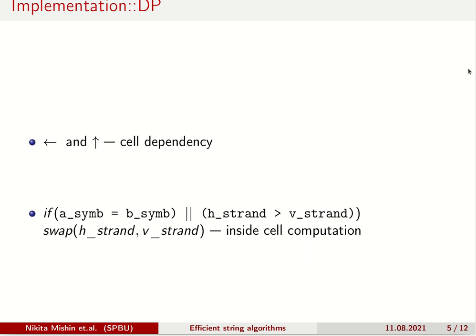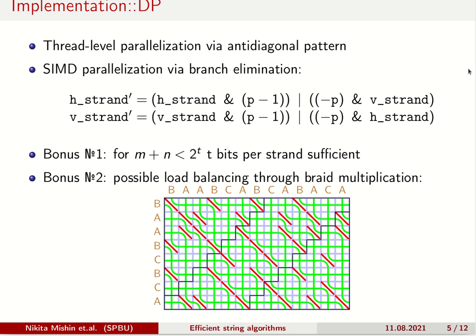What we see? We see vertical and horizontal cell dependencies and branch condition within cell computation. What can we do with this? First, we can apply an anti-diagonal pattern to parallelize computation. Then we can apply SIMD parallelism via branch elimination. Here p denotes a combining condition that was in if clause. Here p is a bit flag, so p minus 1 is either all bits 0 or all bits set. Similar goes for minus p.